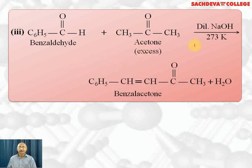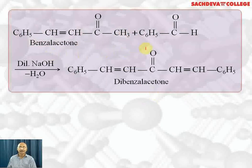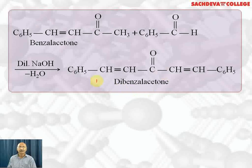Benzaldehyde reacts with acetone in excess in the presence of dilute NaOH: the carbanion of acetone attacks the carbonyl carbon of benzaldehyde, followed by dehydration, giving benzalacetone. Benzalacetone further reacts with benzaldehyde in the presence of dilute NaOH — a carbanion is generated, which attacks the carbonyl carbon of benzaldehyde — and we get dibenzalacetone as the final dehydration product.